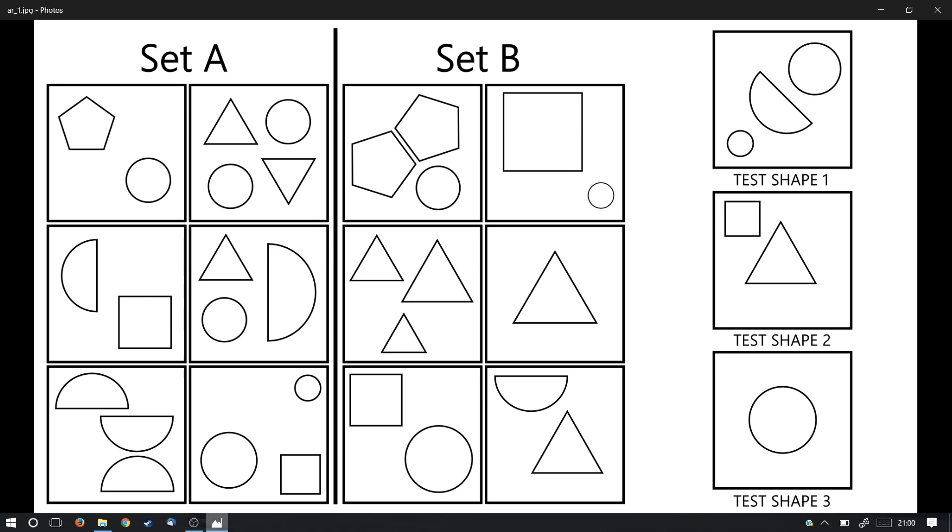But the UKCAT contains a subtest called the Abstract Reasoning subtest, and it's quite difficult, or at least a very large number of candidates find it very difficult. From any research you've done or past papers you've seen, I'm sure that you've seen something like what's in front of you right now. This is very typical of a type 1 question on the UKCAT Abstract Reasoning subtest. There are actually four types of question, but type 1 is the simplest to explain and the best way to get started, which is what this video is all about.